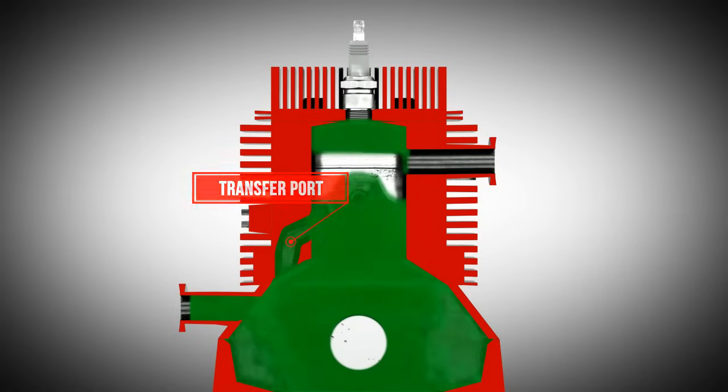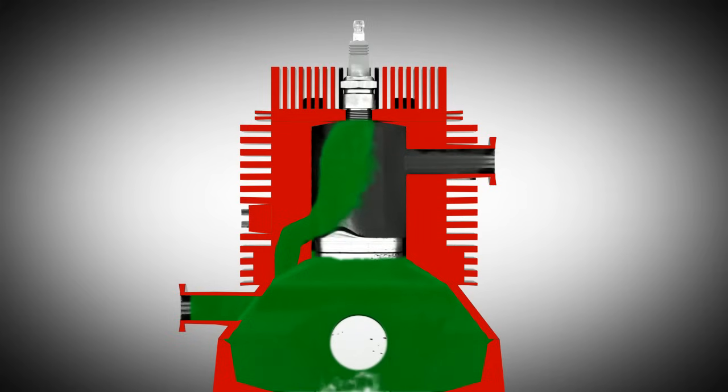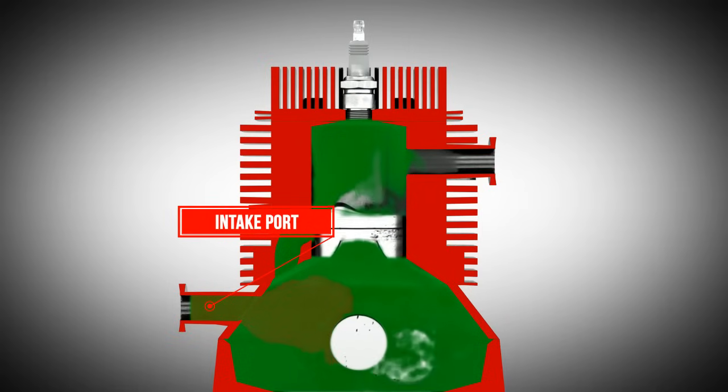Let's take a closer look at the individual strokes. In the first stroke cycle, a fresh fuel-air mixture is drawn in via the intake port. It is shown here in red. It is added to the existing mixture in the crankcase.